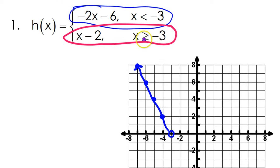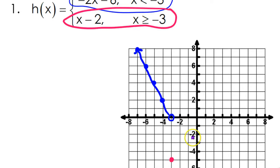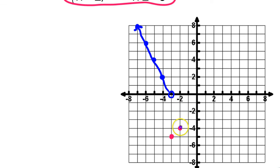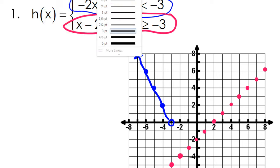Now I want values that are greater than negative 3, so I'm just going to scroll down. Negative 2 comma negative 4, for example. We knew ahead of time, looking at the slope, that this was going to go up 1 over 1. So it's just going to go up 1 over 1 from here. So there you go.